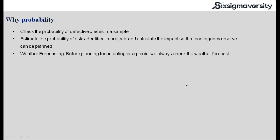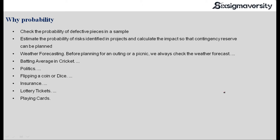Probability is also used in weather forecasting. It is also used in sports to identify the batting average in cricket, for example, politics — whether you would win the election or not based on various study surveys that have been taken, flipping a coin to take any sort of decision either yes or no, insurance companies, lotteries, playing cards — everywhere probability is used to take a decision.